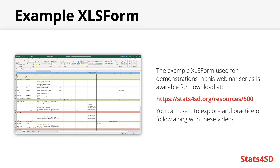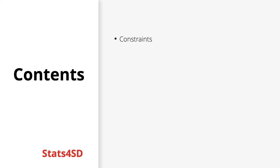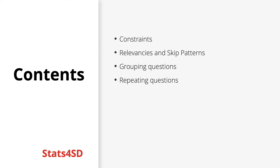The examples shown in this video will be part of an example survey form partnered with this presentation, which you'll be able to download and explore. Just like in part three, there will also be another brief video showing you specifically how I did some of the things in Excel. As for the contents of this part, I'm going to start by going over how to put constraints into your form, then relevancies and skip patterns, then how to group questions together, how to repeat questions, key tips and best practices, and finally some external links for other resources.